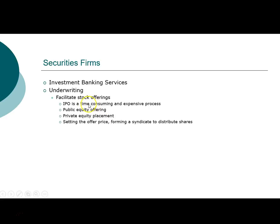For public offerings, whether initial or seasoned equity offerings, the primary role of the securities firm is to set the offer price. They will form a syndicate — a group of investment banks — to help distribute the shares, because they need to find enough investors to buy the shares the company is selling.